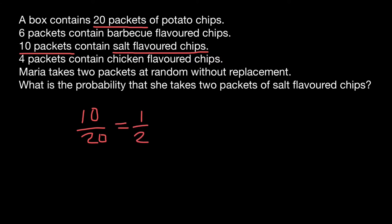Now, what is the probability that Maria chooses the second packet, and again it's going to be salt flavored chips? Now we are choosing not out of 20 packets, but 19 packets because we already chose one packet. There are going to be nine packets of salt flavored chips, not 10, because we have the probability that the first one was a salt flavored chips packet. So for Maria, the probability to choose the second packet of salt flavored chips is going to be nine out of 19.